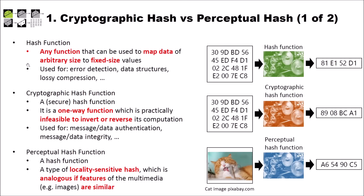What is a hash function? We had several videos where we had a look at hash functions, and in this video I will give you a short recapitulation. A hash function is any function that can be used to map data of arbitrary size to fixed-sized values. This binary data — which can be everything — goes into our hash function and then we get a fixed-length value. Hash functions are usually used for error detection, for data structures, for lossy compression, and a lot of other things.